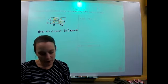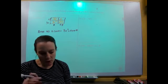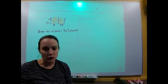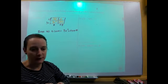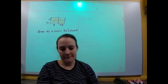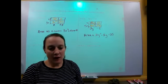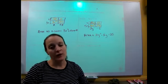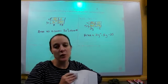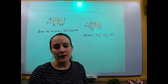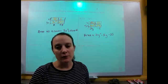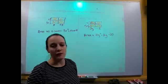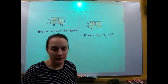Pause the video here and try B. Okay, Algebra 1, time to check your answers. You should get 10Y squared minus 11Y minus 35. This right here is a 14Y if you can't read it.